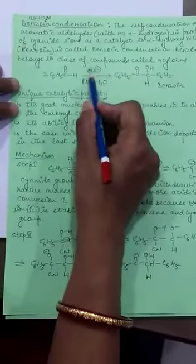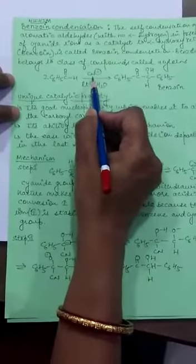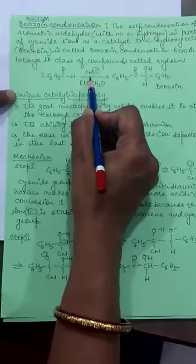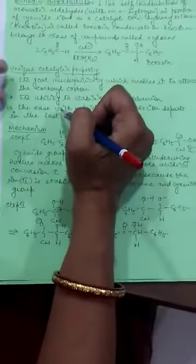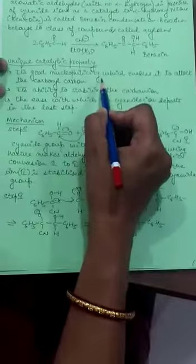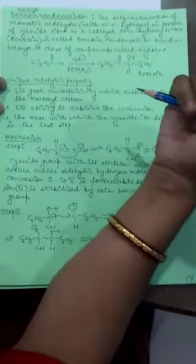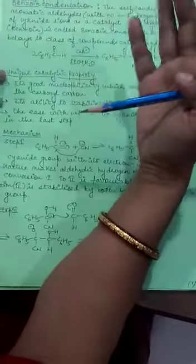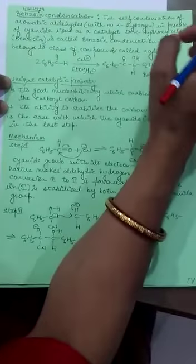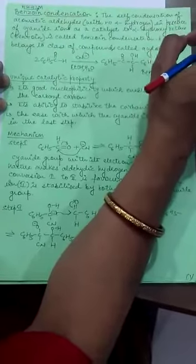The reaction is given here. Cyanide acts as a catalyst. Why is cyanide used as a catalyst? Because of its three unique properties. First, it has good nucleophilicity which enables it to attack the carbonyl carbon. Second, its ability to stabilize the carbon ion. And third, the ease with which the cyanide ion can depart in the last step. That is why cyanide is used as a catalyst in this reaction.